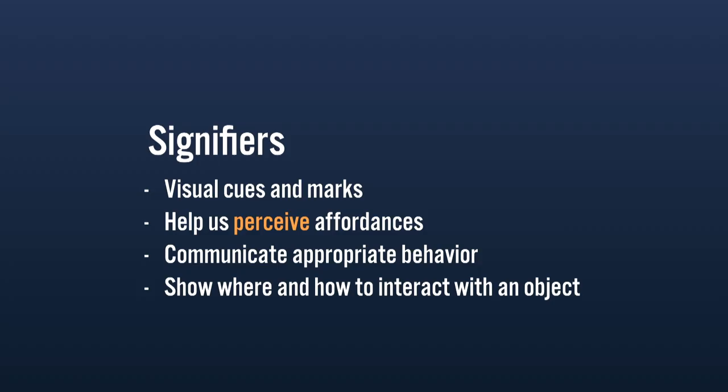A doorknob affords turning, but not for a dog, a one-year-old, or a person without full use of their hands. As designers, our job is to help people perceive these affordances — to understand what they can do with an object or interface. When you hear a designer going on about affordances, nine times out of ten what they're actually talking about is signifiers. Signifiers are the visual cues and marks that help us understand what an object can do, communicate appropriate behavior, and show us where and how to interact.